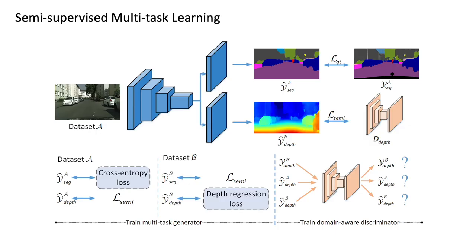To address the above-mentioned issue, we propose to train the model on one domain by minimizing the supervised loss for the labeled task with annotated samples, as well as the semi-supervised loss for unlabeled tasks with identical samples that do not have corresponding annotations. To consider all input domains, we iteratively apply the above training scheme over each dataset to fully leverage the supervisory signals for each task.